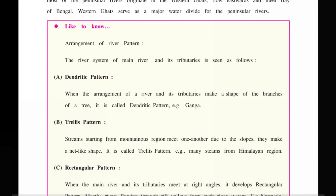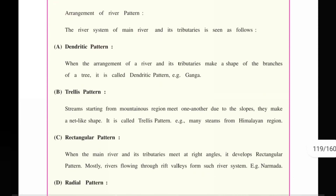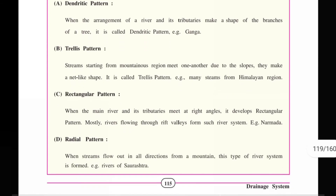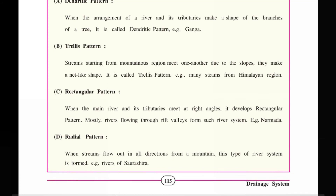Now let's look at the arrangement of river patterns. The river system of the main river and its tributaries is seen as follows. When the main river and its tributaries form a tree-like branching shape, we call it a dendritic pattern. Streams starting from a mountain region, coming together due to slopes and forming a net-like shape, are called a trellis pattern, which is mainly seen in the Himalayan region.